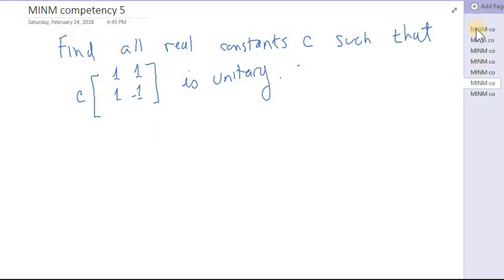Okay, this fifth problem, or I guess it's the sixth problem down the list, says find all real constants C such that C times [1 1; 1 -1] is unitary. So go ahead and pause the video and see how you can do with this.